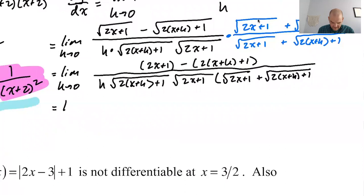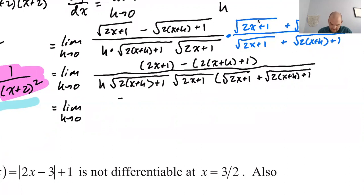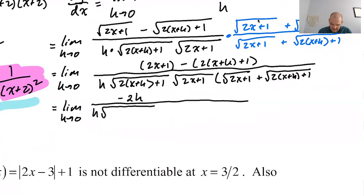Simplify the numerator. Limit as h approaches zero. We have 2x plus 1 minus 2x minus 2h minus 1. So 2x minus 2x: gone. 1 minus 1: gone. We actually just have negative 2h over this whole denominator.